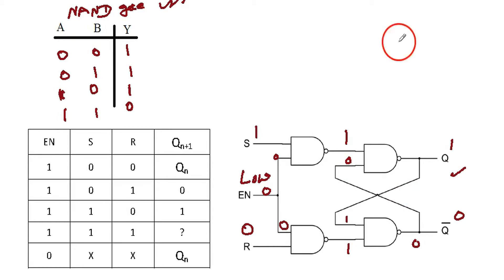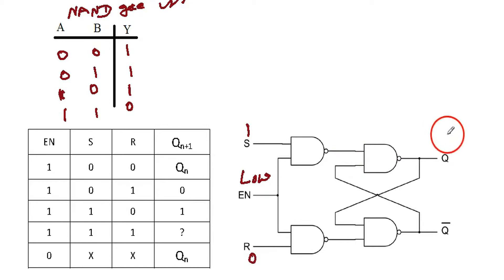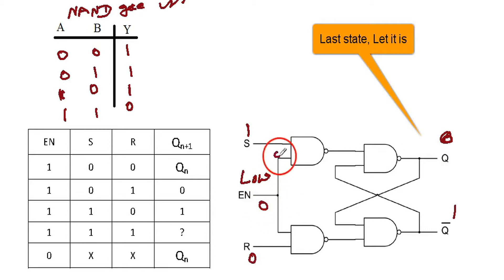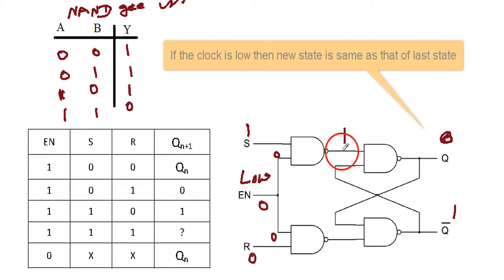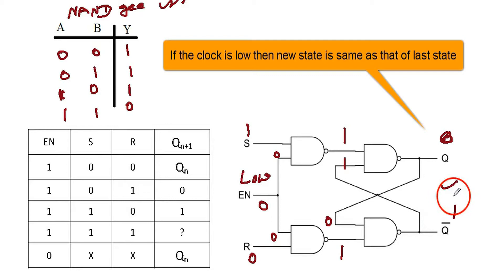Again, if the clock is low and S=1, R=0, whatever the previous state — let us assume 0 and 1 — the latch will retain the previous state. If the clock is low, it is immaterial what the values of S and R are. That's no problem.